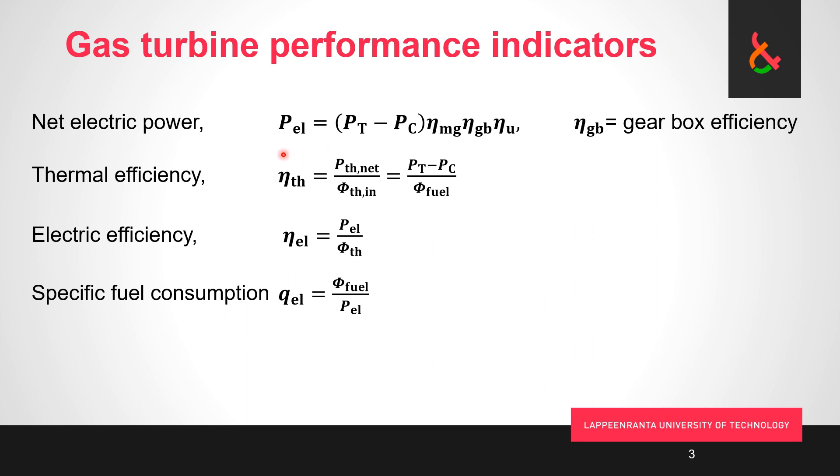First of all, net electric power. We start by calculating the net thermal power, that's the difference when we deduct from turbine thermal power what is consumed by the compressor.